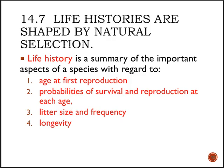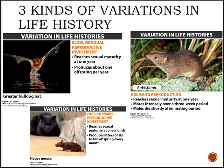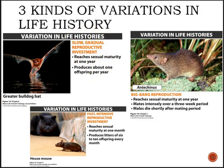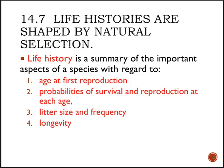All of these life histories are shaped by natural selection. We're going to look at three very common variations of life history patterns. Keep in mind that we'll be dealing with each of the four topics for each of the various patterns. The first pattern is called slow gradual reproductive investment.